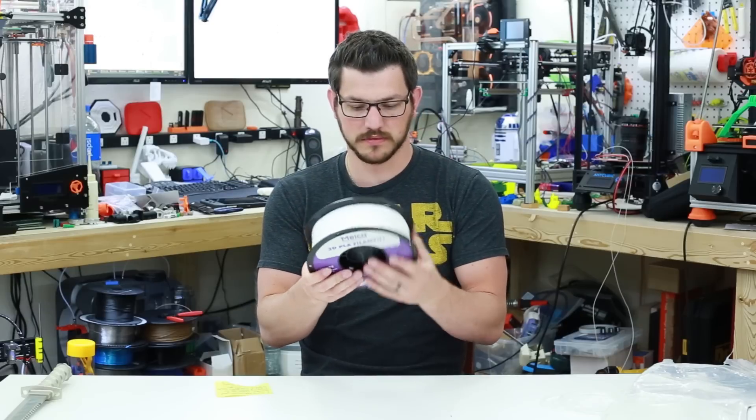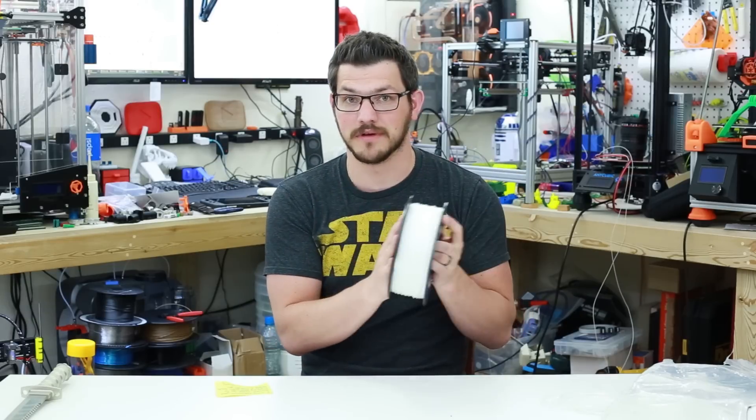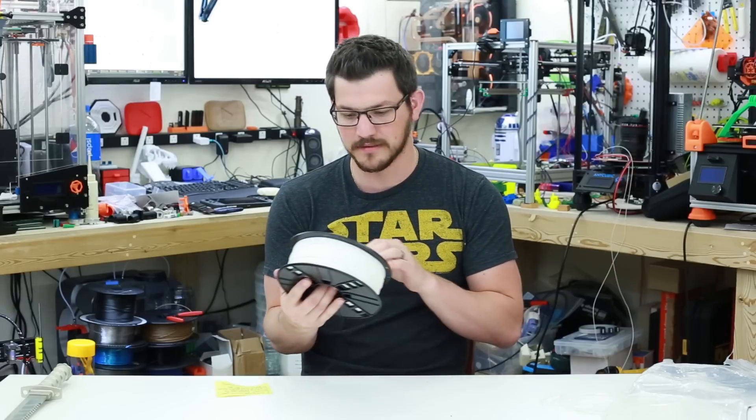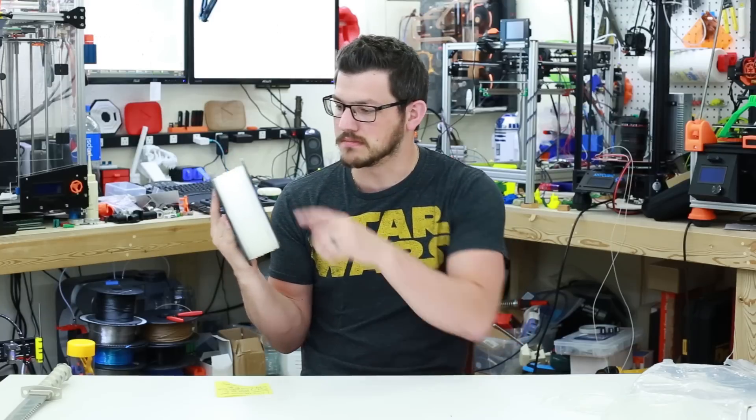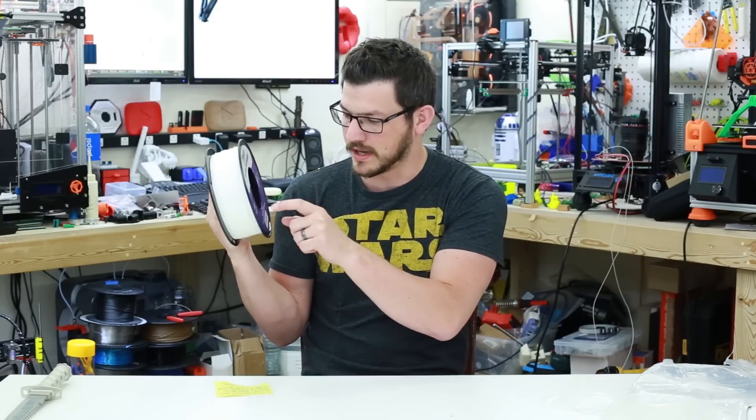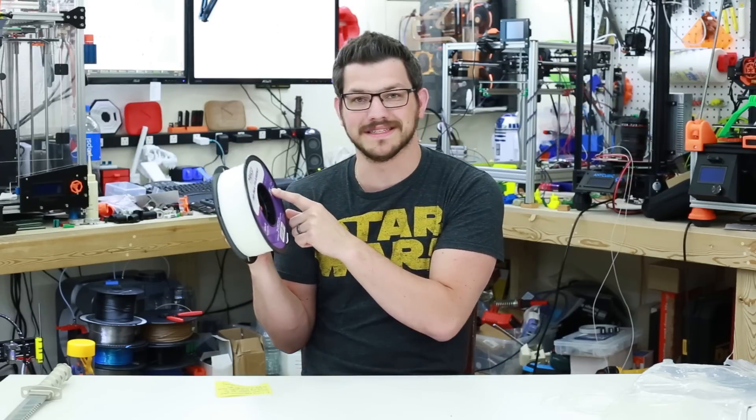Here is the spool. It has some cutouts here in the back which are really nice, you can actually see how much filament you have. A lot of companies don't do that, I wish more did. I have a nice colorful purple and white sticker on here. It's Melka 3D Printer Filament. It's white, it tells you the hex code for it. Here's the diameter, the tolerance is plus or minus 0.03 millimeters.